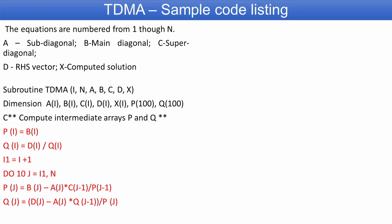What is shown here is a sample Fortran code listing to achieve TDMA. Equations are numbered from 1 to n. One special point: the matrix has values only along 3 diagonals — main diagonal, sub diagonal, and super diagonal — remaining elements are all zero. So we do not store the matrix in full form; we only store the main diagonal, super diagonal, and sub diagonal as independent arrays: a, b, and c. In array a we have all elements belonging to the sub diagonal, b has elements of the main diagonal, and c has elements of the super diagonal. This way we avoid storing the full matrix with zeros, saving memory and computational effort — that is the specialty of TDMA.